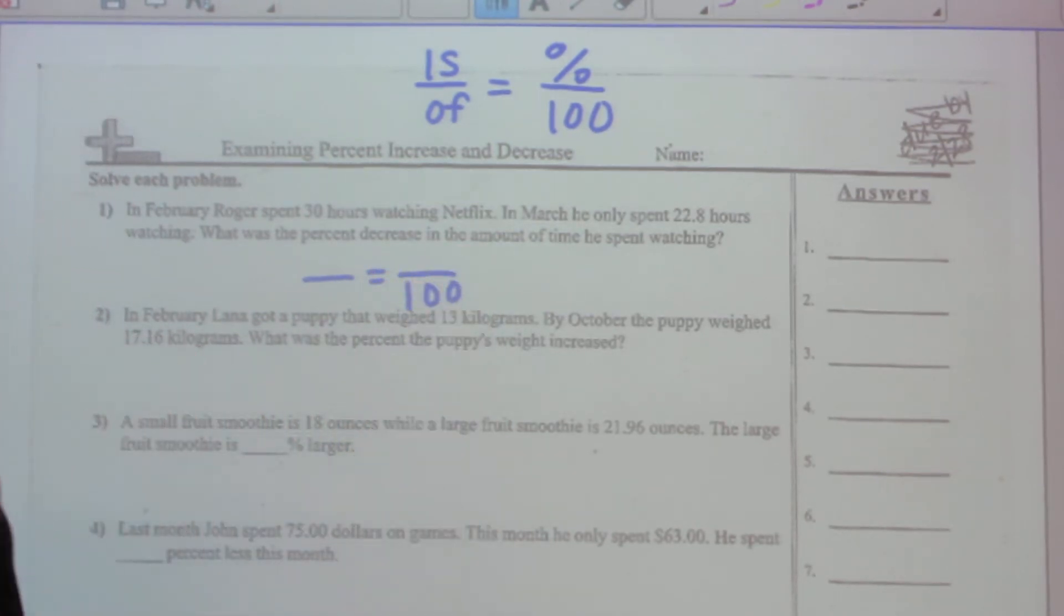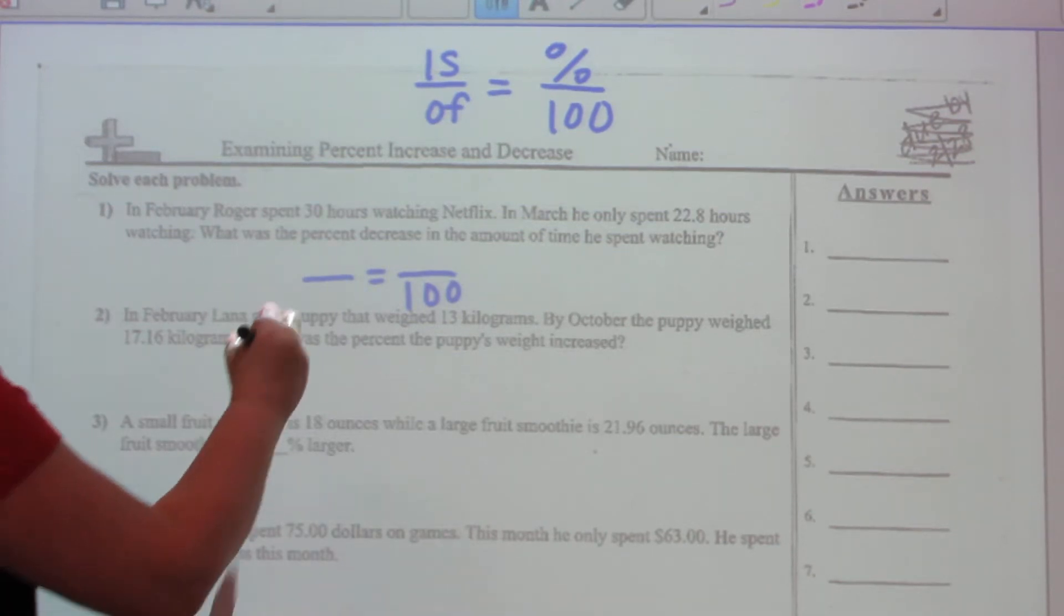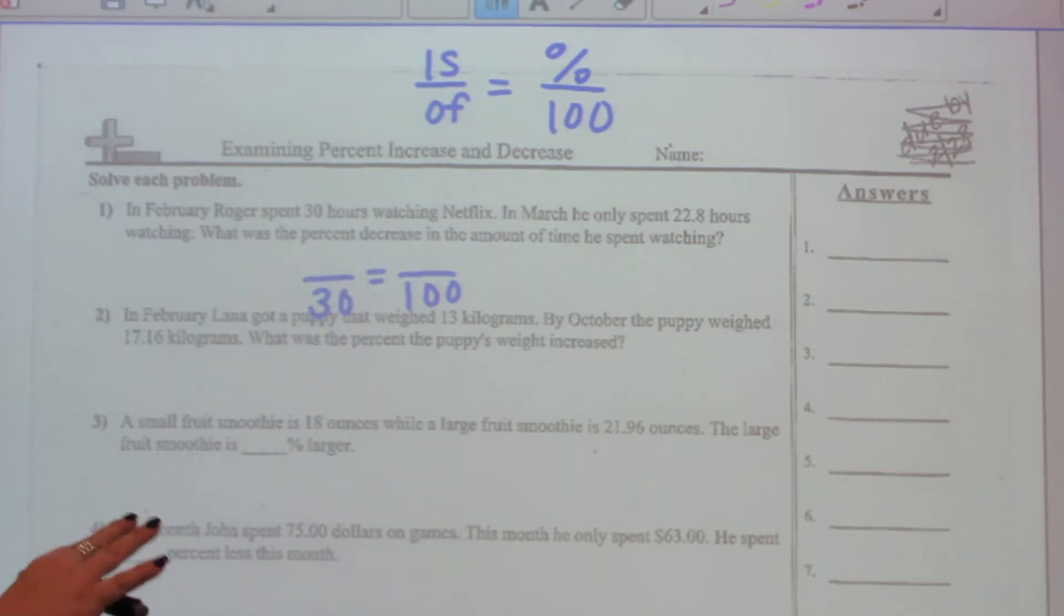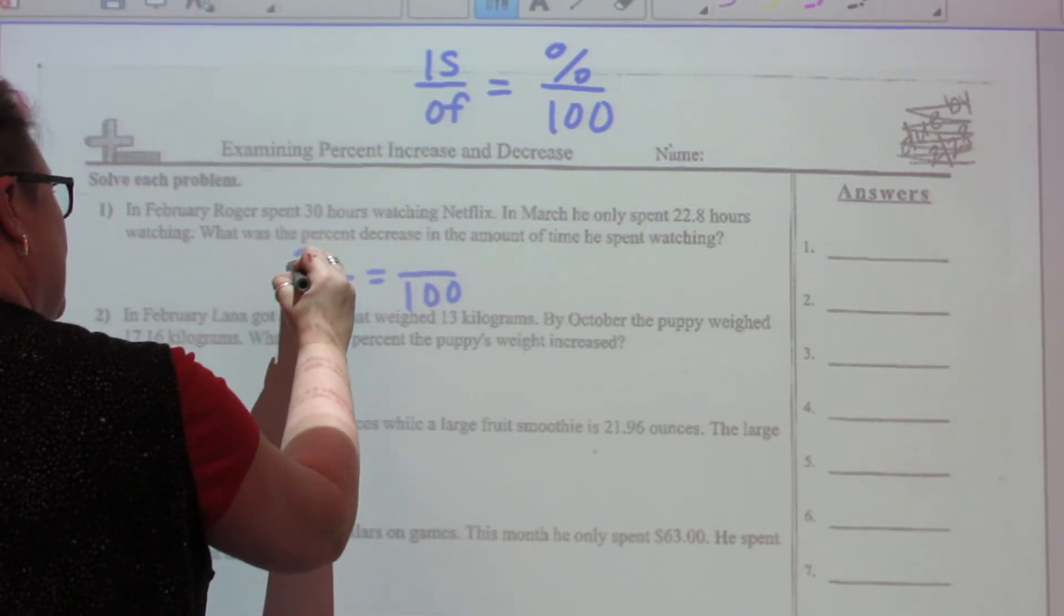For every percent problem, two fraction bars set equal to one another with a hundred on the bottom of one of them. Okay, so Roger spent 30 hours, that's my original or my total, the whole thing for what I originally was doing. Then in March, he only spent 22.8 hours.